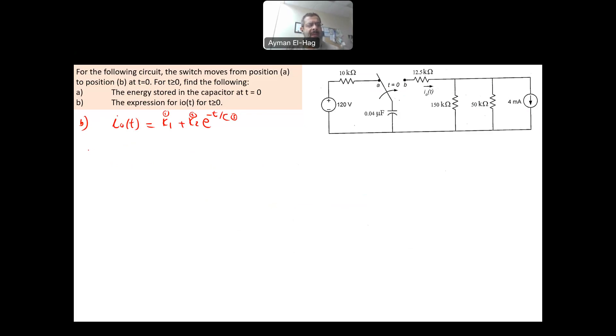We need to solve at T equal to 0 plus, which is the moment we close the switch. My circuit will be, now my capacitor at T equal to 0, as we mentioned in the previous step, will stay at the same voltage as before we move the switch. So this is 120 volt. Then we have here 12.5 kilo ohm, 150 kilo ohm, 50 kilo ohm, and finally, the 4 milliamp supply. And I need to find your I0 at this moment.